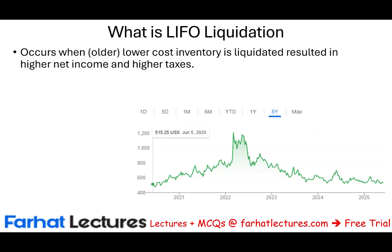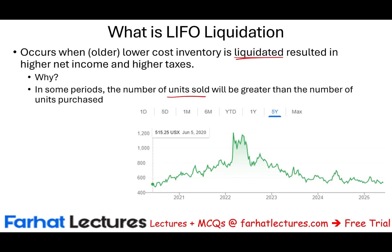When your inventory is liquidated and you cannot replace it — because the number of units sold is greater than the number of units purchased — you're selling at a faster rate than you are replacing inventory. If that happens, you're going to distort net income. You will have a higher net income and a higher tax bill.